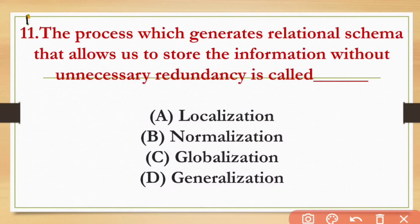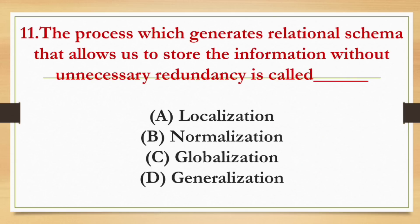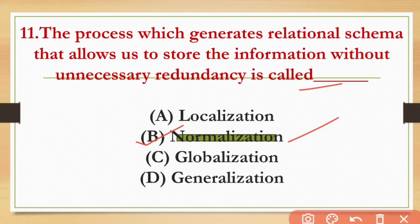The process which generates a relational structure that allows use of stored information without unnecessary redundancy is called — the options are localization, normalization, globalization, and generalization. The answer is normalization, which removes redundancy.